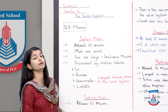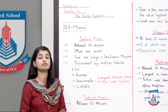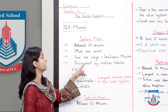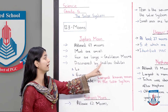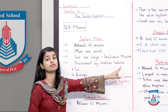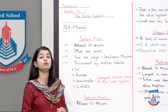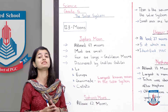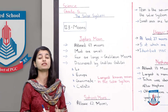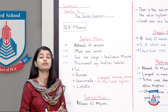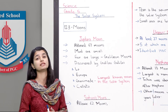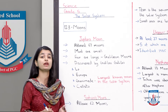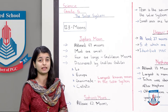Most of Jupiter's moons are small. Jupiter ke jo zyadha taadaad mein moons hain woh kaafi chhote hain, siwai unke char ke jo bohot zyadha bade hain aur jinko kehte hain Galilean moons. Galilean moons basically Galileo ke naam se nikla hai, jo ek bahot hi famous scientist tha. Galileo is known because he invented a lot of things and also made many important discoveries about space.